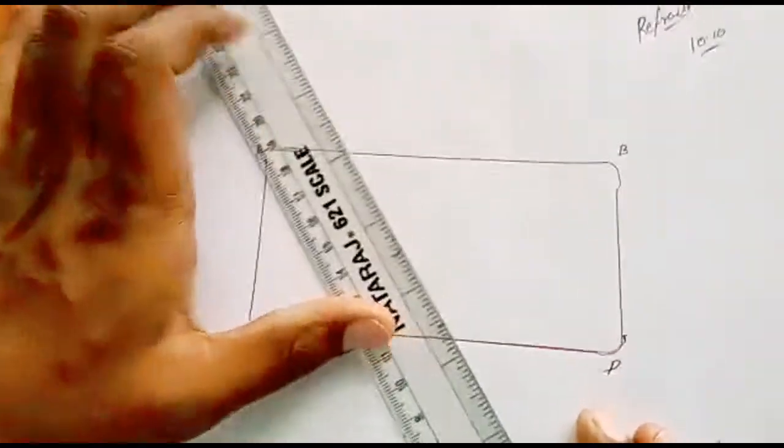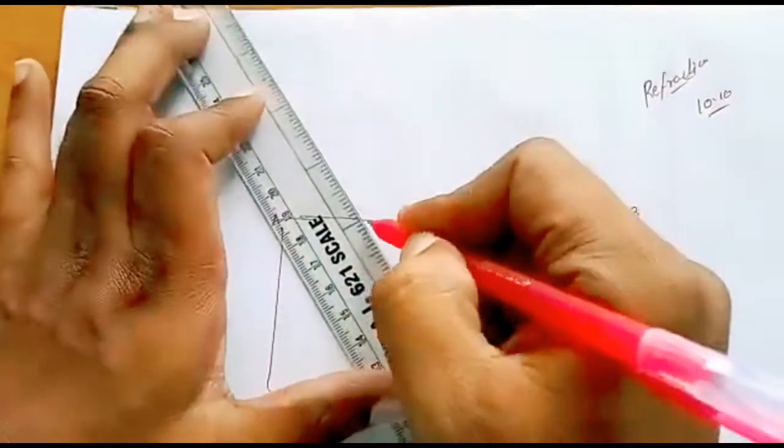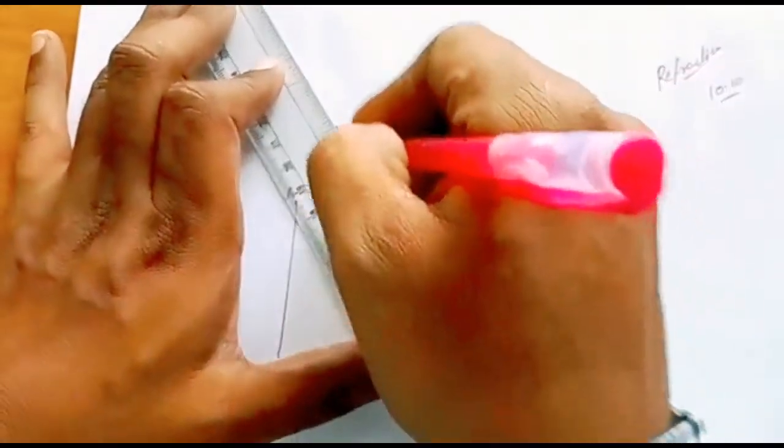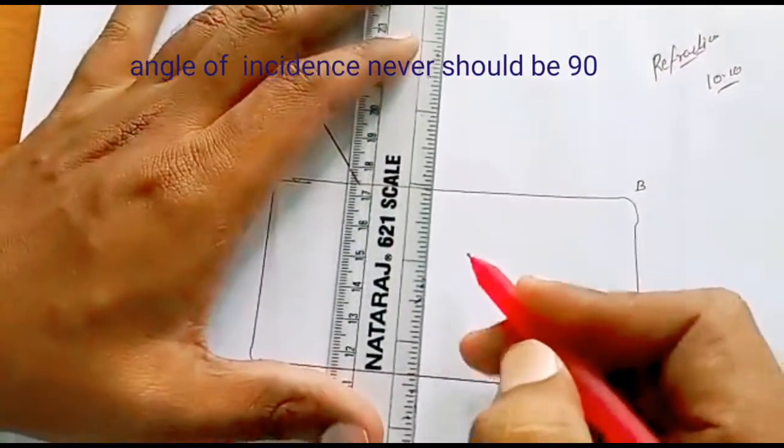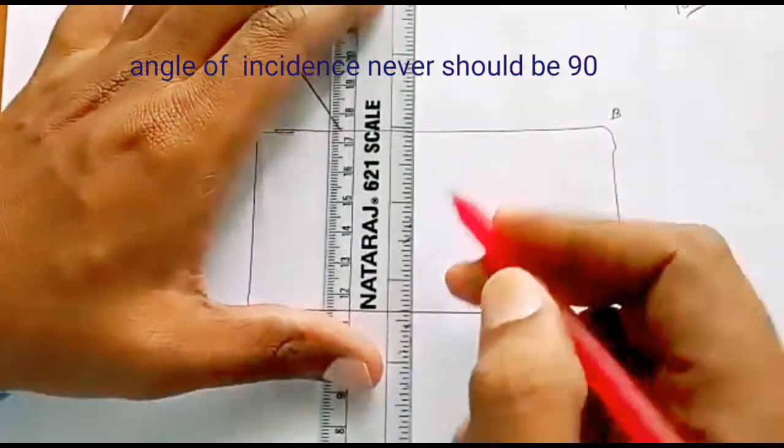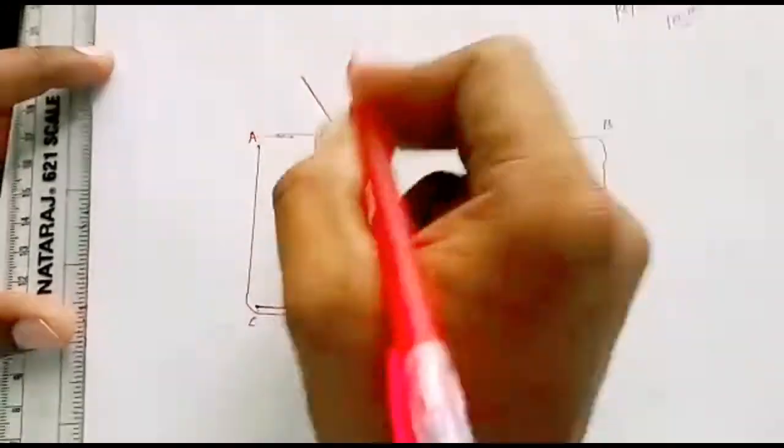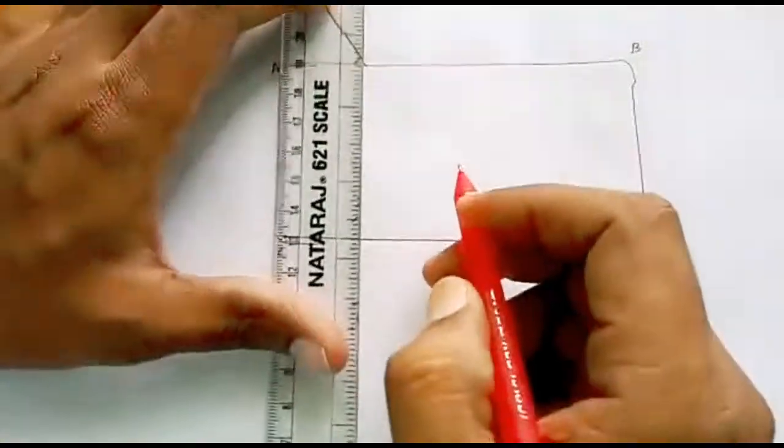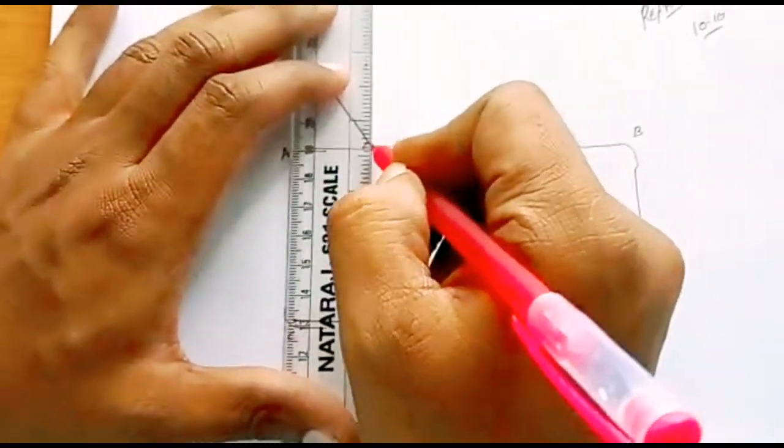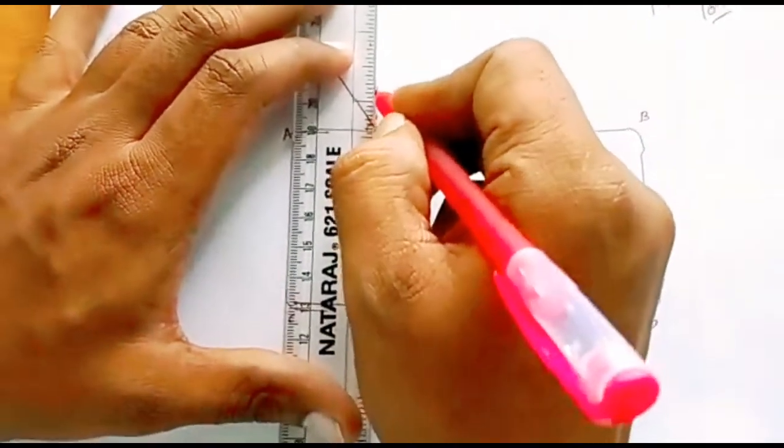Now I will take a scale and make an angle of incident ray. Remember students, the angle of incident should never be 90 degrees because if the ray is coming through 90 degrees, it never refracts. So this is angle of incidence and now I will make the normal line. This is the normal line.